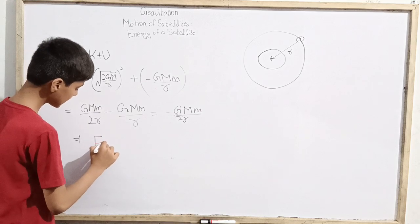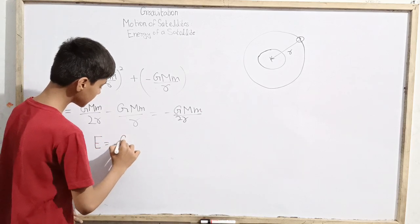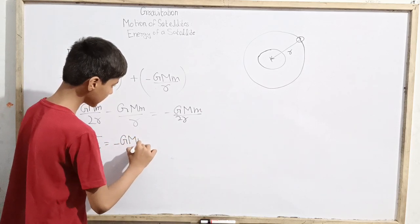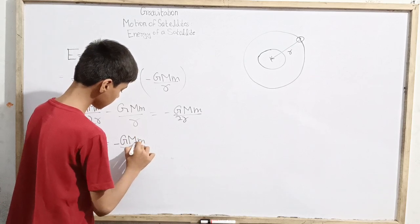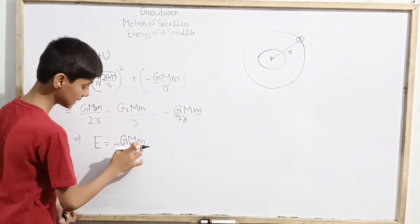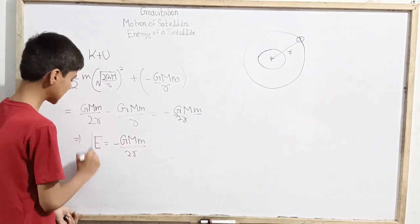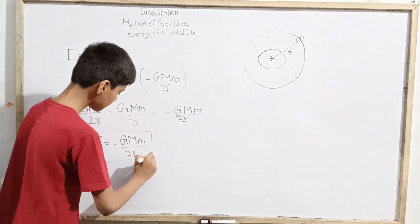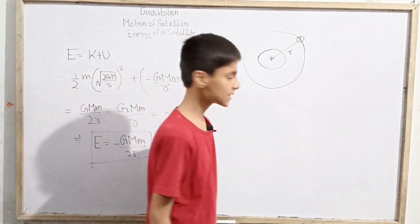So from here we see that the total mechanical energy of a satellite orbiting around the Earth - here we write M sub E, that's mass for Earth, but if around any other specific planet, that can be mass of that certain planet - at center to center separation of R.